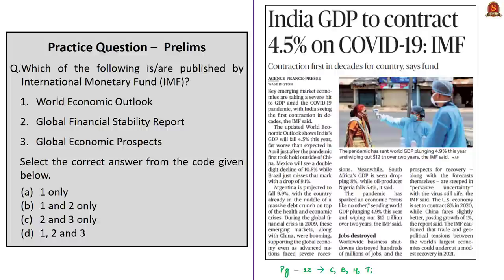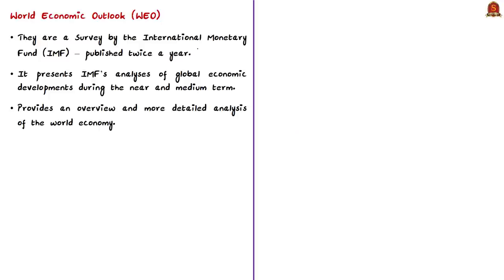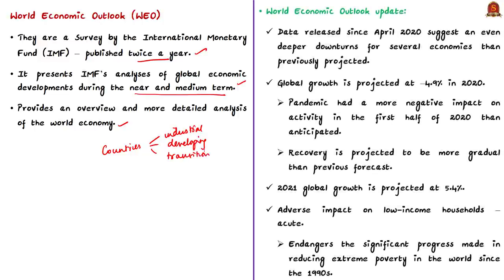Let us look at a question framed based on the news article about the projections of the World Economic Outlook Update by the International Monetary Fund. The World Economic Outlook reports are a survey by the IMF published twice a year, presenting analysis of global economic developments during the near and medium term. In April 2020, the World Economic Outlook was released, indicating an unprecedented decline in global activity due to COVID-19. The data released since then suggest an even deeper downturn for several economies than previously projected. The global growth is now projected at minus 4.9% in 2020, which is 1.9% below the April forecast.